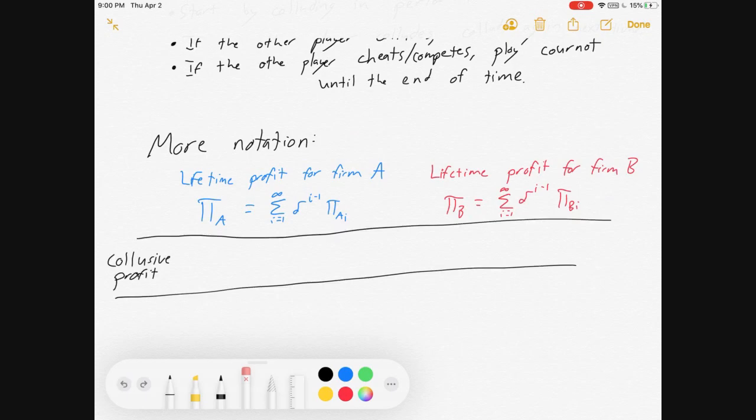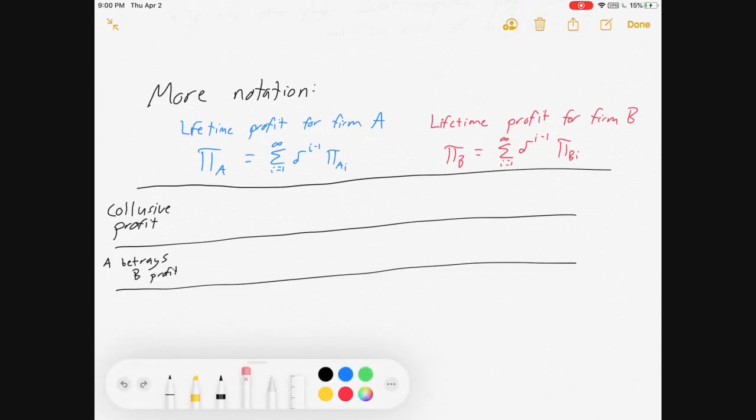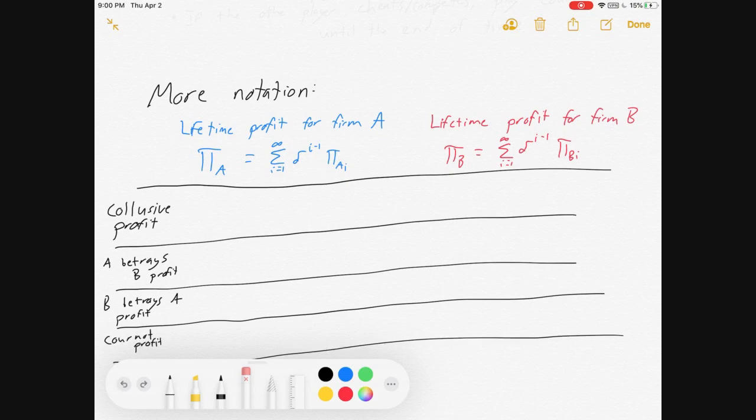So if we look at their collusive profit, we're going to compare collusive profits versus the profits when A betrays B versus the profit when B betrays A versus Cournot profit. Collusive profit, we'll put an M superscript on it to suggest they're splitting monopoly profits. And then there's A and B subscript to say which firm they are. If A betrays B, A cheats and gets cheating profit.